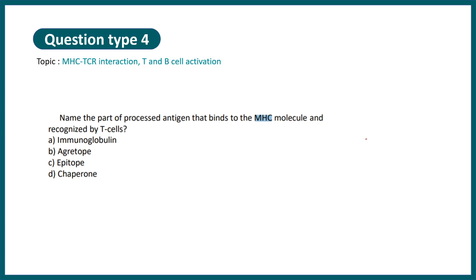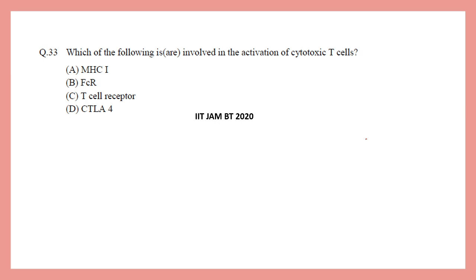Question type 4 is from MHC-TCR interaction or T cell-B cell interaction. For example: name the part of a processed antigen that binds to the MHC molecule and is recognized by the T cell. In IIT JAM 2020 they asked: which of the following is involved in activation of cytotoxic T cells? The answer is MHC class I bound peptide and T cell receptor interaction, which is important for cytotoxic T cell activation.